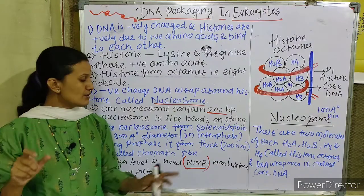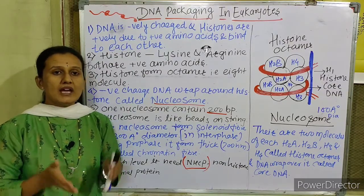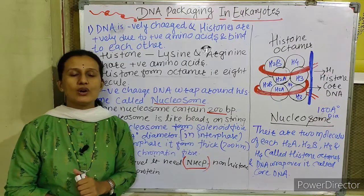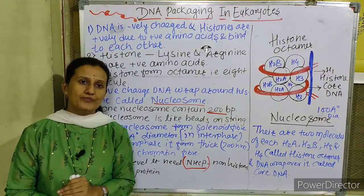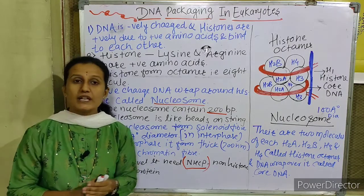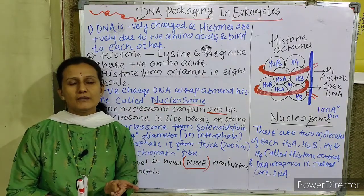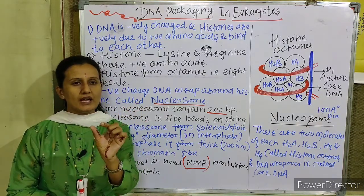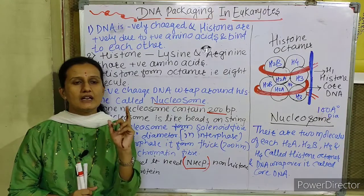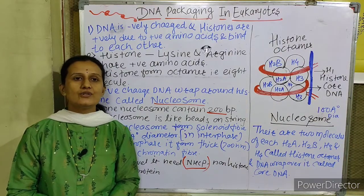DNA with histone protein plus non-histone chromosomal protein (NHCP) forms the genetic material in eukaryotic organisms. In this way, DNA is packed inside the eukaryotic nucleus. The nucleus contains nucleoplasm, nucleolus, ribosomes, and genetic material — DNA plus histone protein plus non-histone chromosomal protein (HCP and NHCP). This is how DNA packaging takes place in eukaryotic organisms. Thank you, students, for watching today's video.